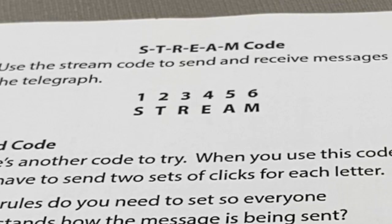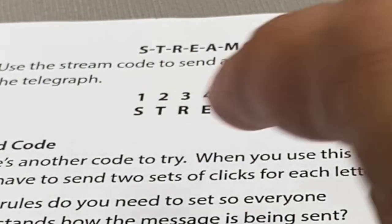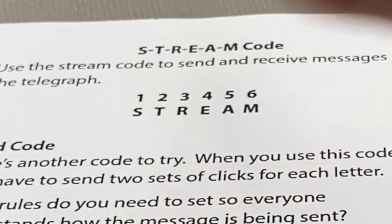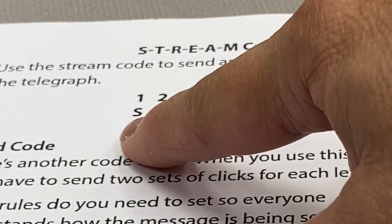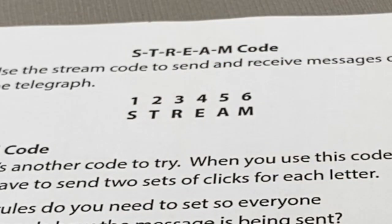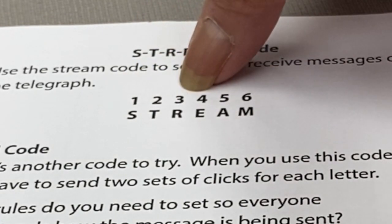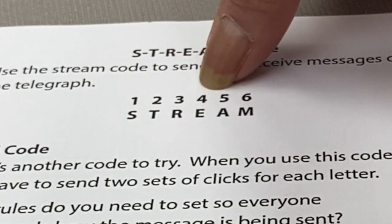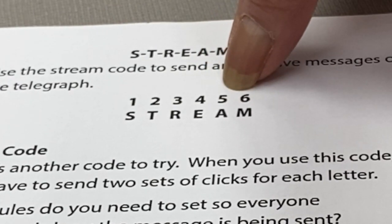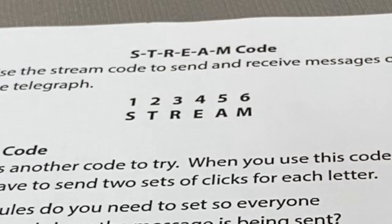So let's take a look at the stream code. In the stream code, you would use one click for S, two clicks for T, three clicks for R, four clicks for E, five clicks for A, and six clicks for M.